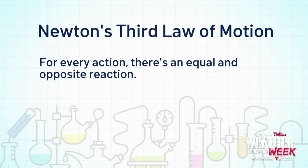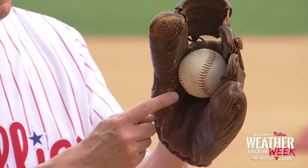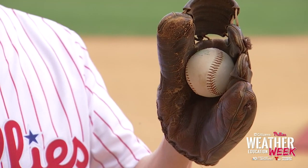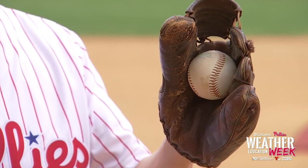Newton's third law of motion: for every action, there's an equal and opposite reaction. Let's break down this third law. For example, if someone throws me a ball, the ball has force. But I push back with the mitt, and it brings the ball to a stop. It's an equal and opposite reaction.